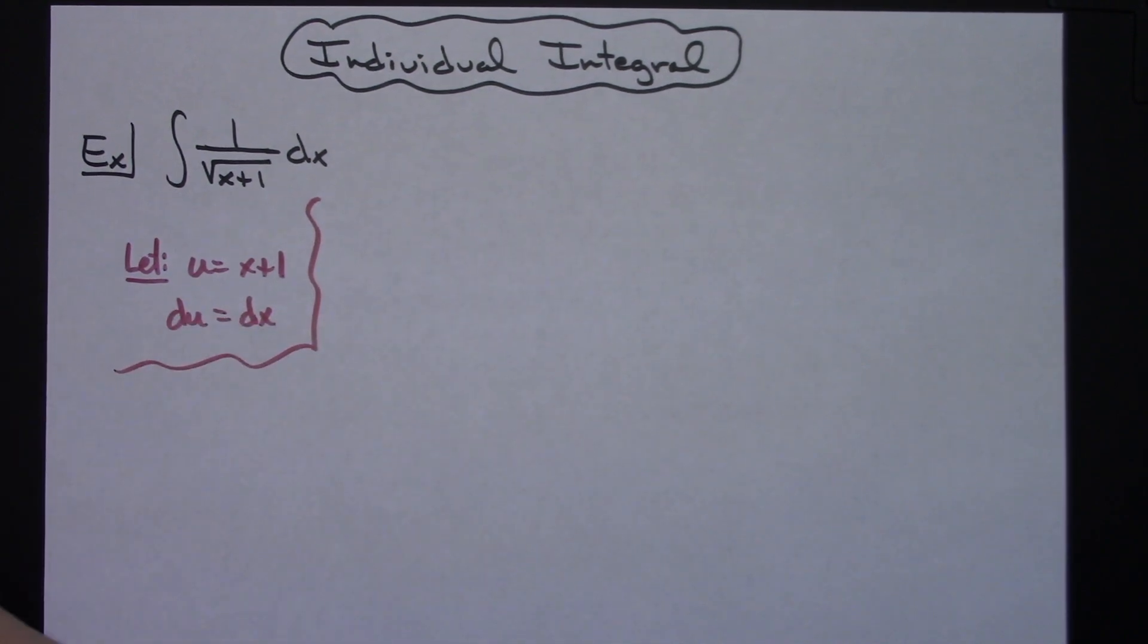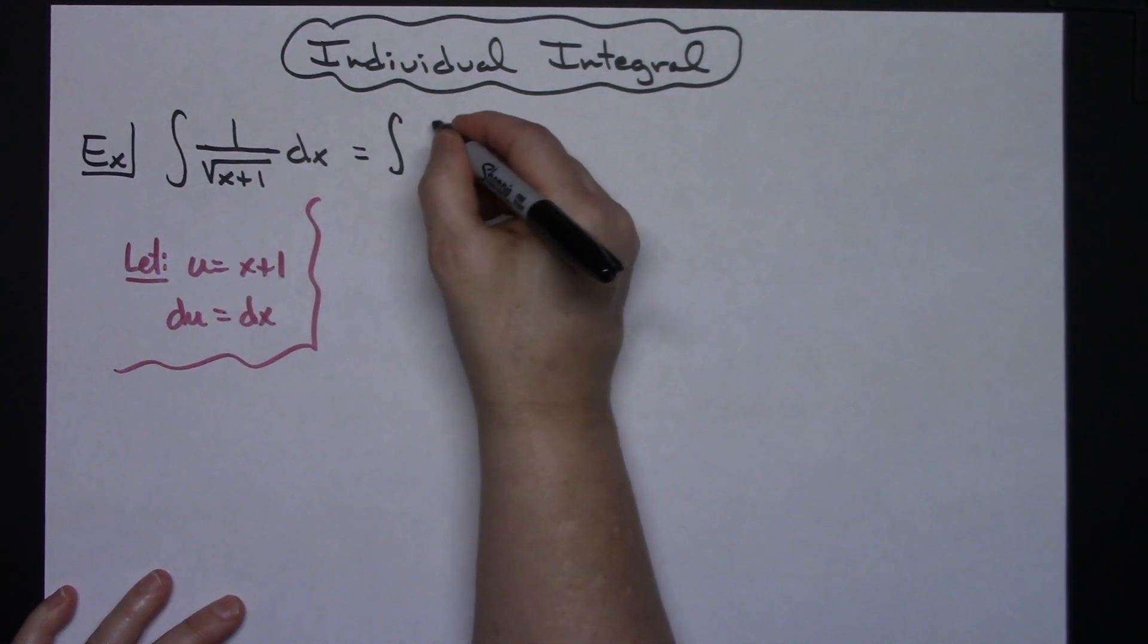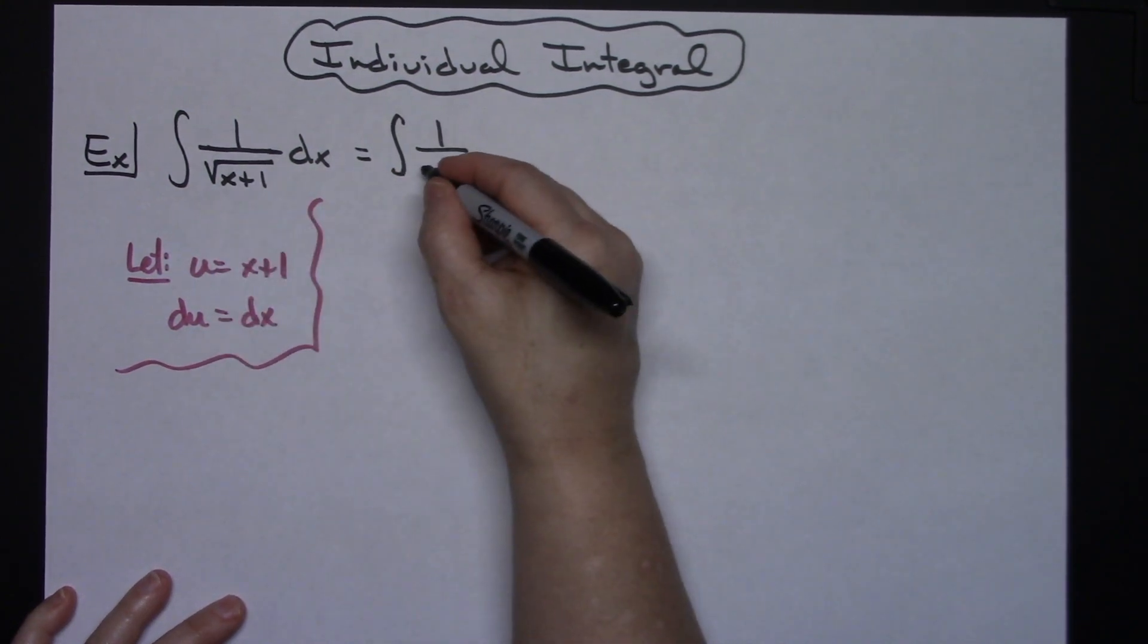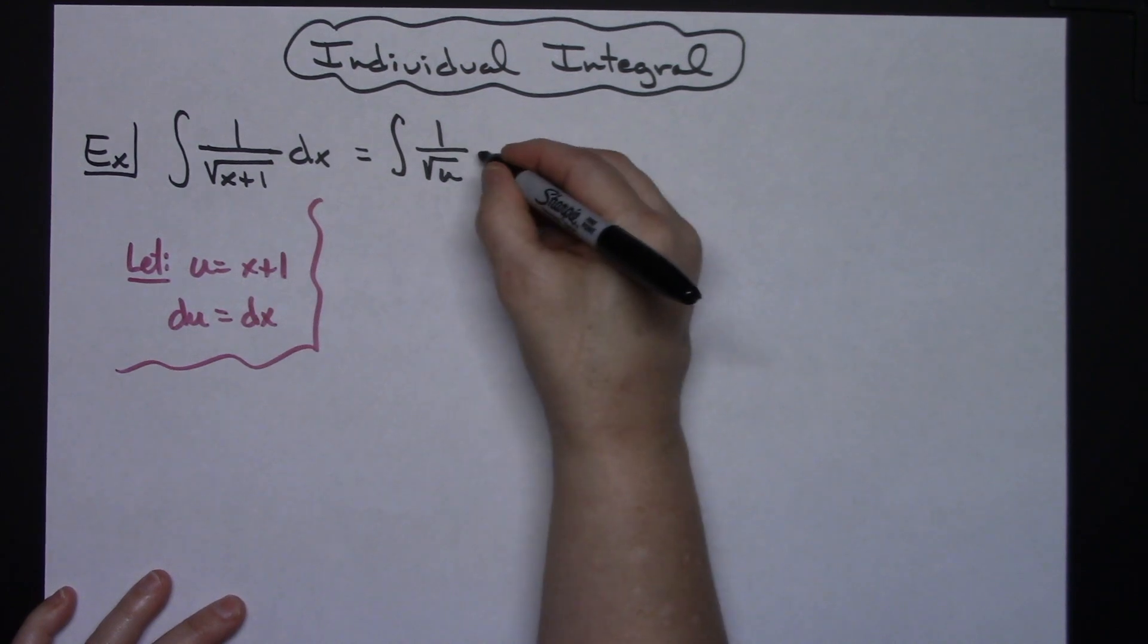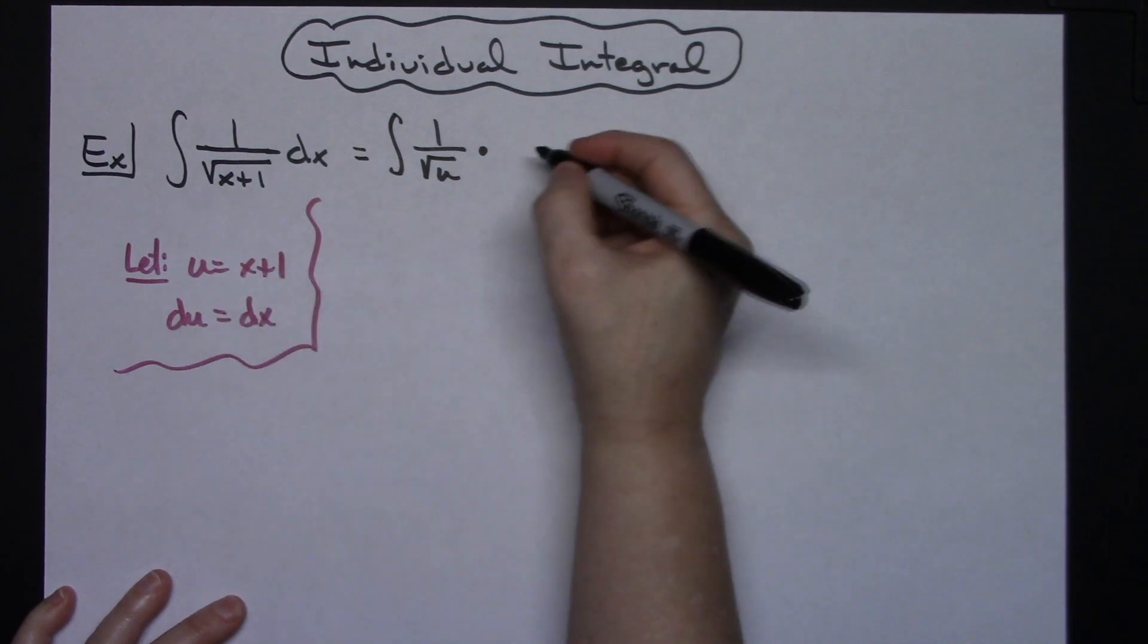That's going to set us up now and allow us to come back up here and start substituting. We'll have the integral of 1 over that x plus 1, I'm going to replace with u. So I'll have the square root of u and then replacing that dx with what it equals, which is du.